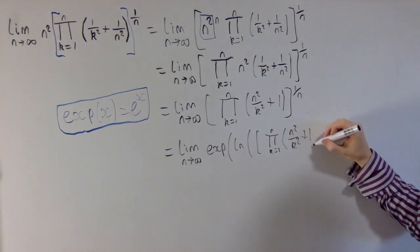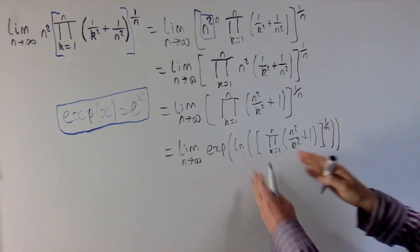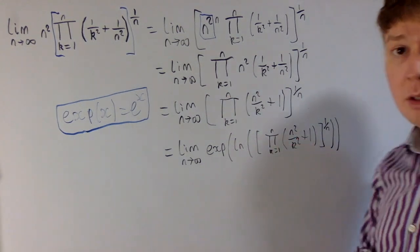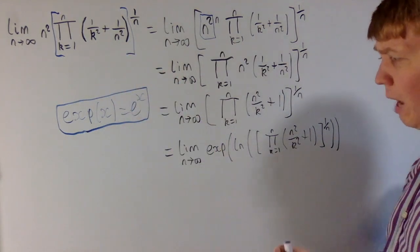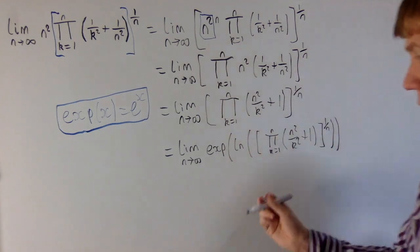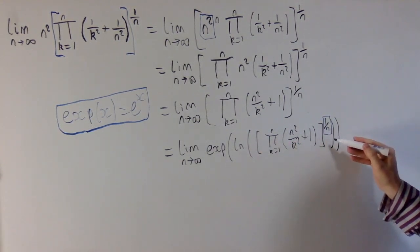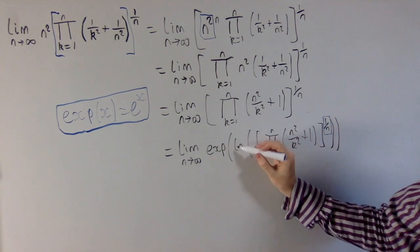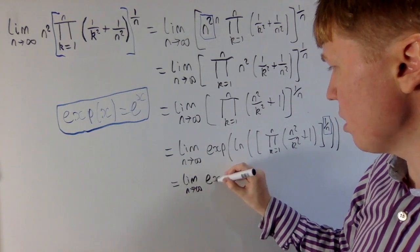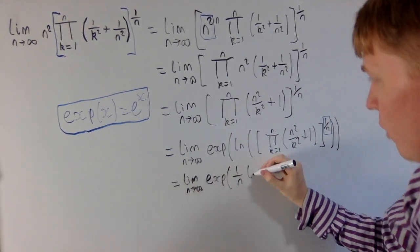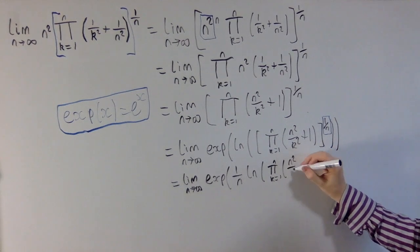The reason for writing this as e to the power of ln of everything is that when you have the natural log of a product, you can write this as the sum of all the different logarithms separately. This turns our infinite product structure into e to the power of some sort of infinite sum, which is slightly nicer to deal with. The first thing we'll do is take out this power of 1 over n — it's inside the log, so we can take this power of 1 over n outside the log — and then we split up the product.